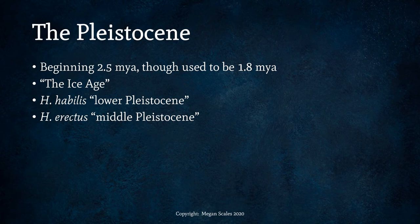The Pleistocene began around two and a half million years ago — although this has changed; it used to be 1.8 million years ago — and we call this the Ice Age. Homo habilis lived in the lower Pleistocene, and Homo erectus lived in the middle Pleistocene.